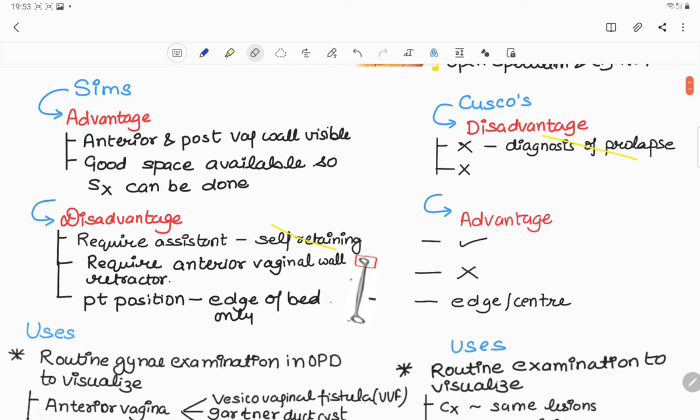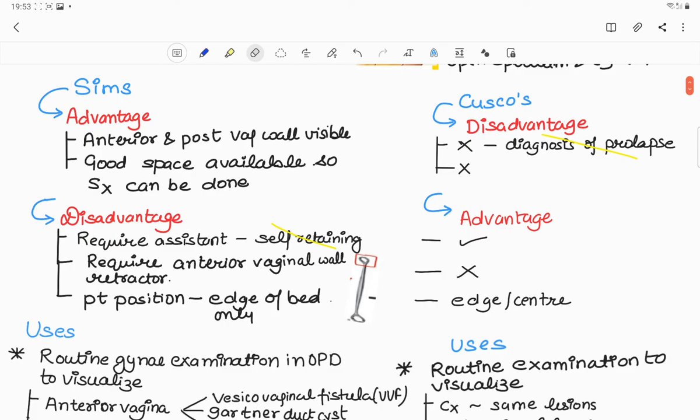What are the advantages of SIMS over Cusco's? Both anterior and posterior vaginal walls are visible and good space is available so that surgery can be done. But in Cusco's, both walls are not visible, therefore prolapse can't be diagnosed and surgery can't be done.